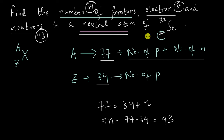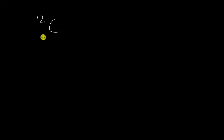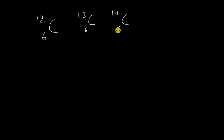Using the element symbol we can find the atomic number and the mass number. In this video I also want to talk about isotopes. If you look at carbon, there are three types of atoms of carbon: ¹²C₆, ¹³C₆, and ¹⁴C₆.